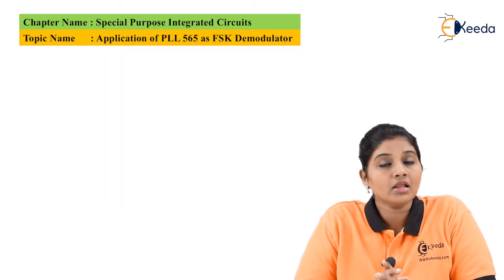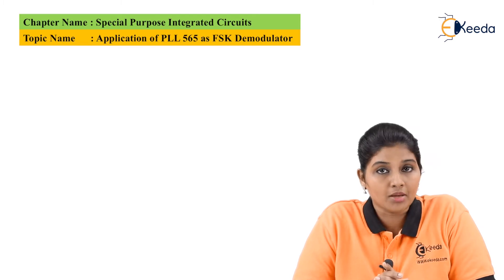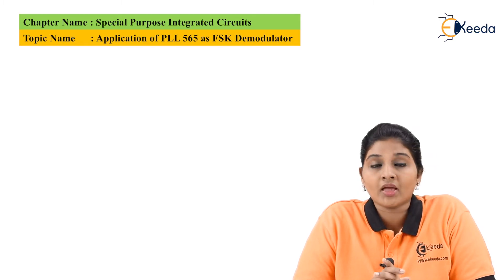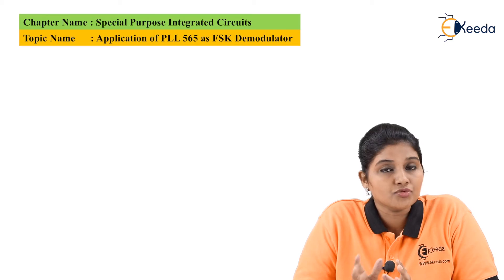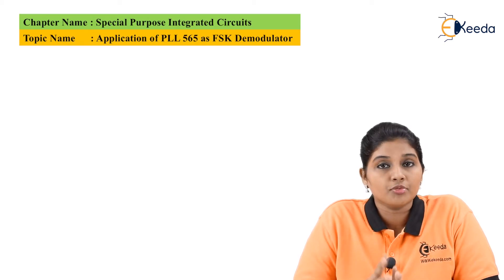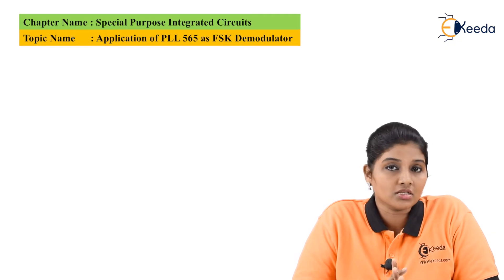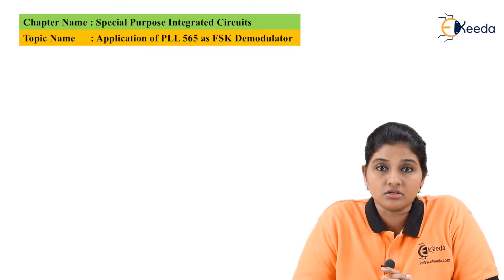The PLL IC565 is available as a 14-pin DIP package and it consists of two input signals. It provides VCO as output signal, and it provides voltage at the output of VCO and other signals.